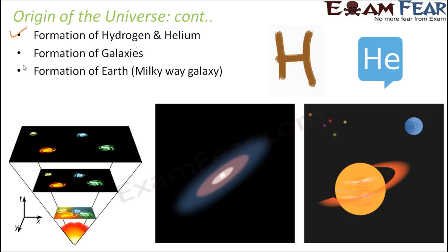Now when was the formation of Earth? Earth was formed around 4.5 billion years back. And where was Earth located? Earth was located in the Milky Way galaxy. Milky Way galaxy consisted of the solar system, which we all studied since our junior classes. In the solar system, you have the nine planets and you have the sun as the star. The solar system is also located in the Milky Way galaxy.